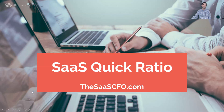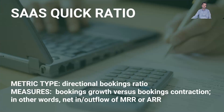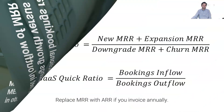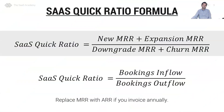Greetings, Ben Murray, the SaaS CFO here with a video lesson on the SaaS quick ratio. This metric type is a directional bookings ratio — it measures our bookings growth versus our bookings contraction, in other words the net inflow or outflow of ARR or MRR in our SaaS businesses, which as we know is the lifeblood of our SaaS business.